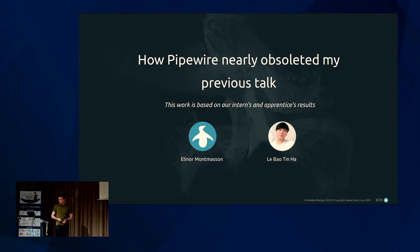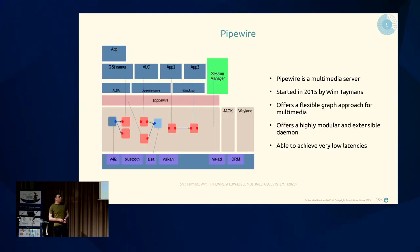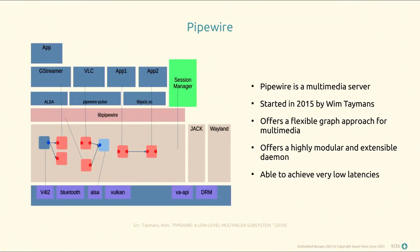This work is based on two interns: Elinor and Tin, who did great work integrating and studying PipeWire. So, what is PipeWire? PipeWire is not just a sound server — it's a multimedia server, originally advertised as a PulseAudio for video devices: cameras and displays. Started in 2015, it offers a flexible graph approach for multimedia, a highly modular and extensible daemon, and is able to achieve very low latency, which is very important for industrial devices.